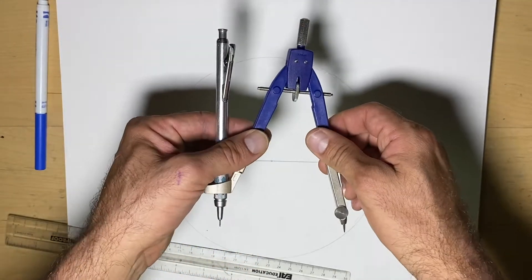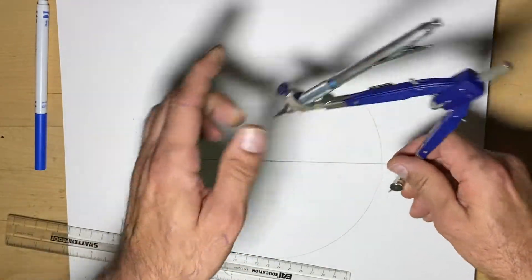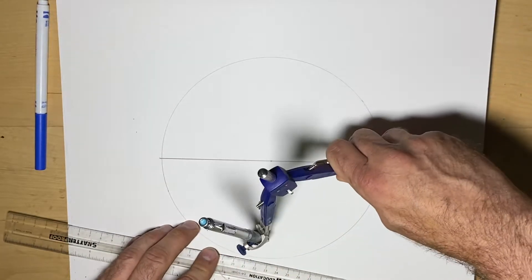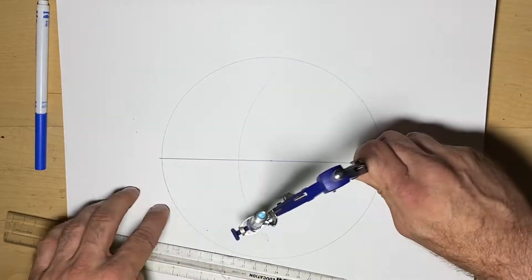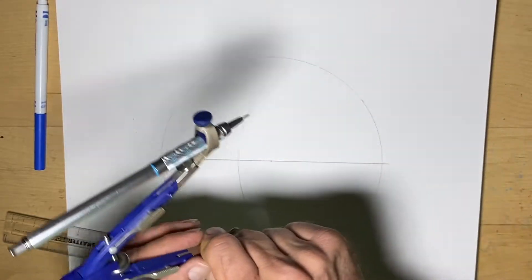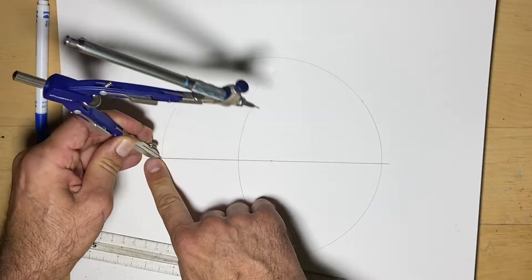We're going to open our compass more and put one point here, then make an arc. It has to go past the middle. Then we go to the other side and repeat that.